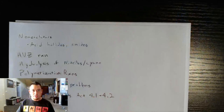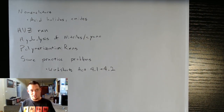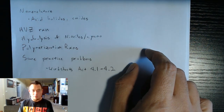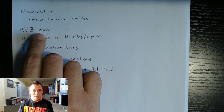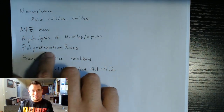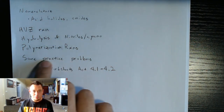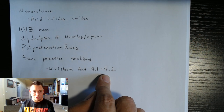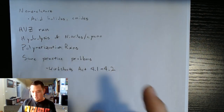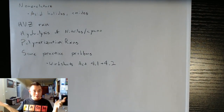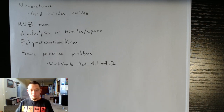Today we're going to be wrapping up the carboxylic acid and derivatives discussion. I did want to go over some more nomenclature — we didn't go over the acid halides and the amides yet. Then I want to go over the Hell-Volhard-Zelinsky reaction, hydrolysis of nitriles and cyano groups, and polymerization reactions. Then I want to do a couple of practice problems from these worksheets. These worksheets are on Canvas. I didn't print them, so I'm going to be working them out on paper.